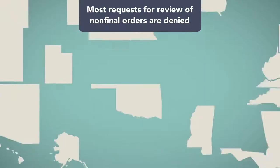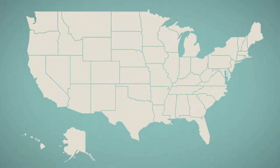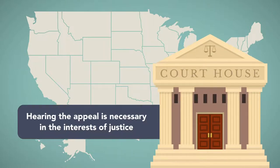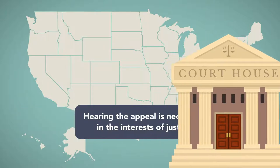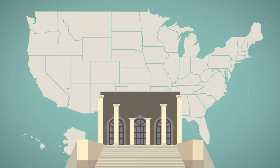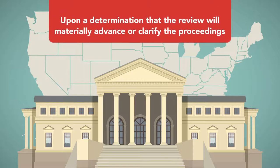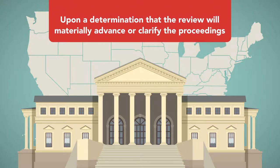Some states do authorize review of non-final judgments more broadly, where the courts find that hearing the appeal is necessary in the interests of justice. Some jurisdictions even allow appellate review of non-final orders simply upon a determination that the review will materially advance or clarify the proceedings.